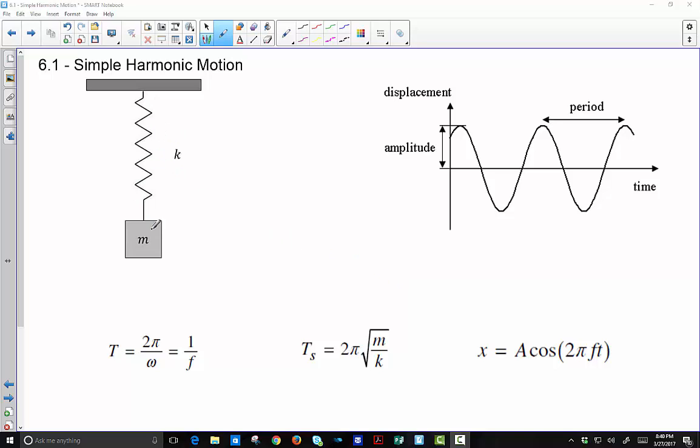But what we did is we analyzed a mass hanging from the spring. So if I hung a mass on a spring and I let it come to rest, then this position right here is called the equilibrium position. Equilibrium. So it's called equilibrium because at this point the net force is equal to zero.